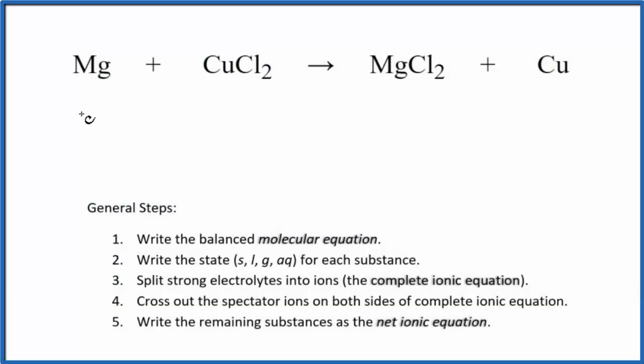In this video, we'll write the balanced net ionic equation for Mg plus CuCl2, magnesium plus copper 2 chloride. This is a single displacement reaction. The magnesium replaces the copper. Copper is all by itself when we're done.